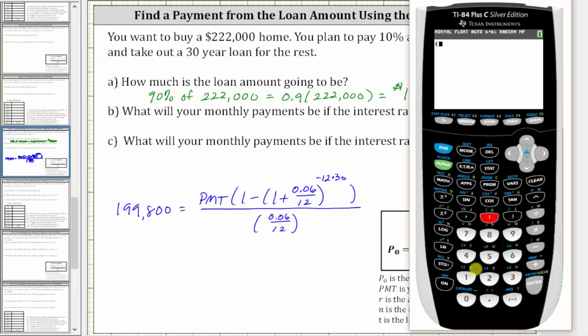So we have open parenthesis, one minus open parenthesis, one plus 0.06 divided by 12, close parenthesis. This is raised to the power of negative 12 times 30, which is negative 360. Right arrow to exit the exponent. Close parenthesis. And then divided by, in parenthesis, we have 0.06 divided by 12.